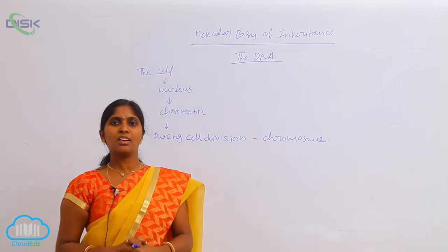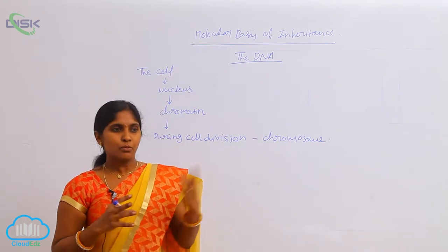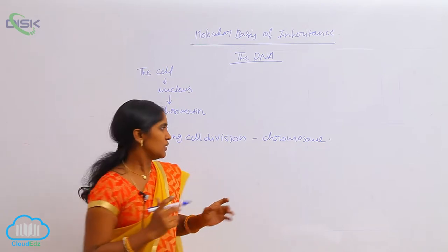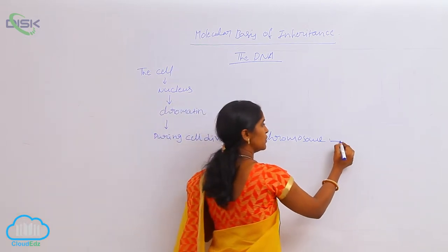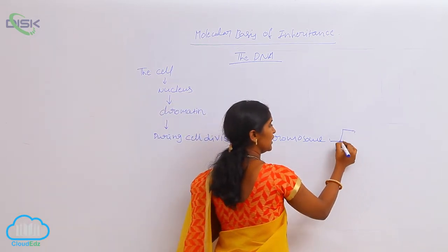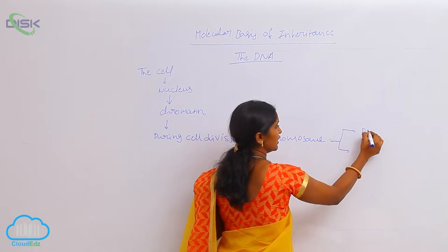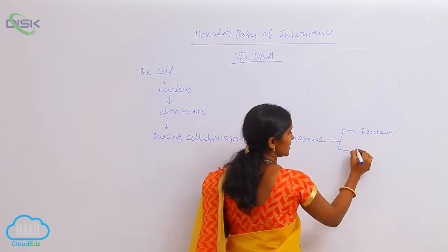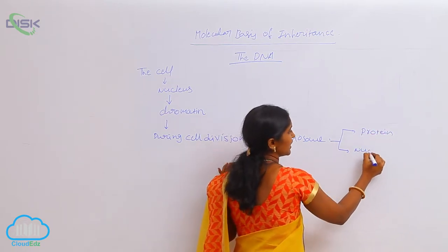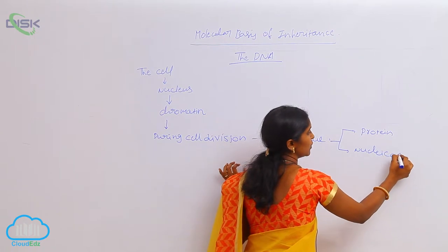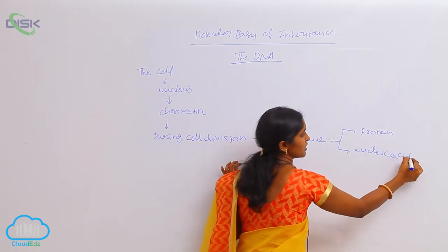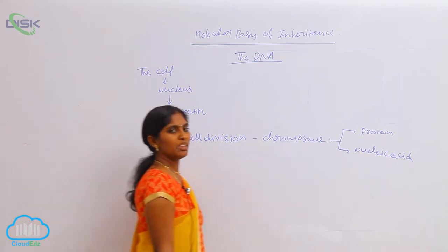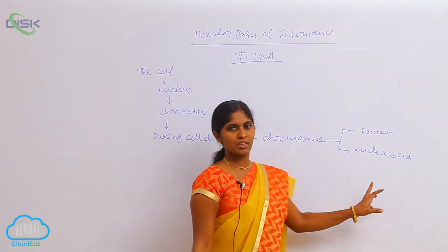What is the chemical composition of the chromosome? The chemical composition of the chromosome is basically of two types: one is protein, and another one is nucleic acid. So the chromosome is made up of protein and nucleic acid.